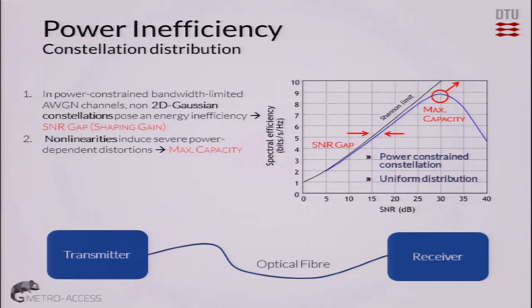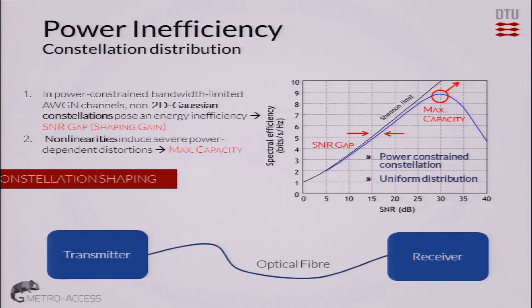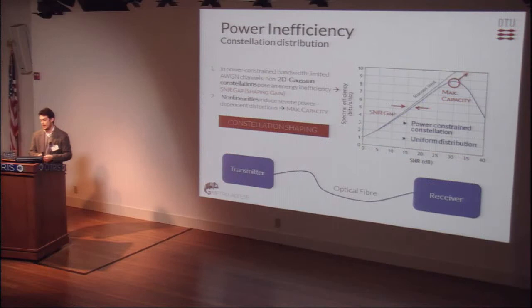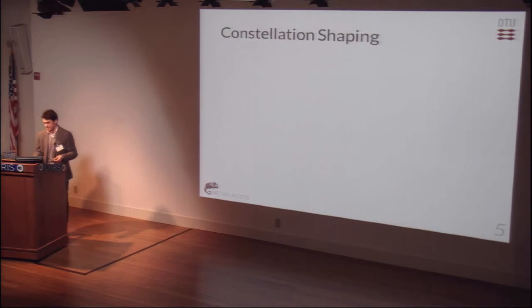Another thing we observe as we increase the signal power is that nonlinearities start making an impact on our quality, and we have this roll-over that is impeding us from reaching more spectral efficiency. So the question is: can we change this distribution such that we can get closer to the Shannon limit, and also perhaps delay the effect of nonlinearities?